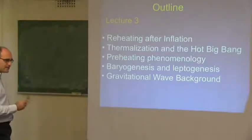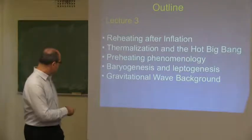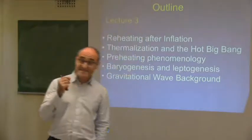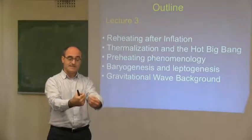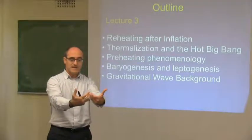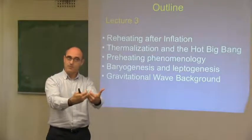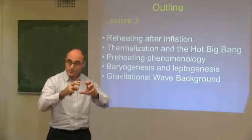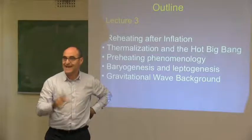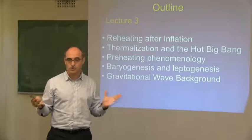If we produce baryons right at the end of inflation through preheating, we might still not be able to verify this easily, because the only quantity that reaches us is this asymmetry — how many baryons over anti-baryons were produced at the time. That's a quantity we can also measure from Big Bang nucleosynthesis. But we may not have other clues on what was the exact process that precisely produced this asymmetry, except for things that could travel since then completely untouched. And what are those? Gravitational waves.